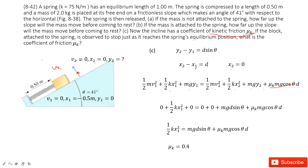We input the known quantities: v1 is 0, y1 is 0, v2 is 0, x2 is 0. y2 can be written as d sine theta. With d equal to negative x1, we solve the equation and find mu_k equals 0.4.